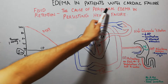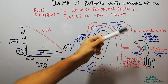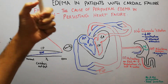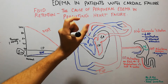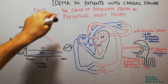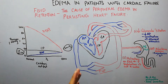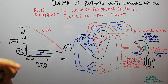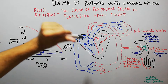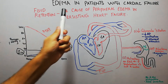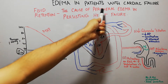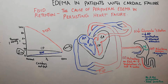Today we are going to talk about the cause of peripheral edema in persisting heart failure — how peripheral edema occurs in heart failure that persists for a long time, or chronic heart failure. We have started the topic of edema in patients with cardiac failure, and in the first lecture we discussed why peripheral edema does not occur in acute heart failure. Today we are going to discuss how peripheral edema occurs in persisting or chronic heart failure.